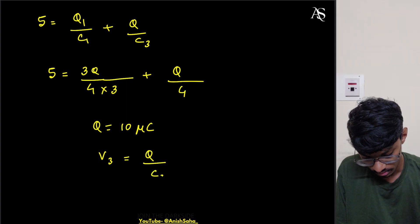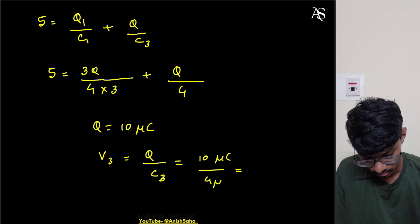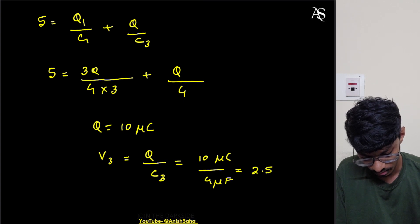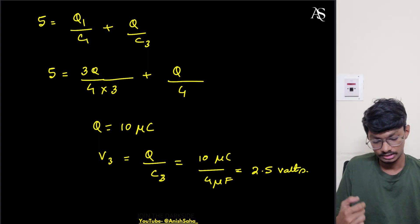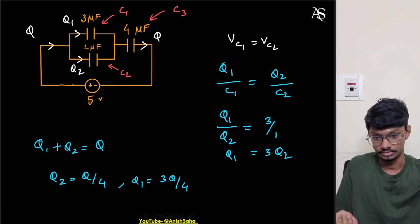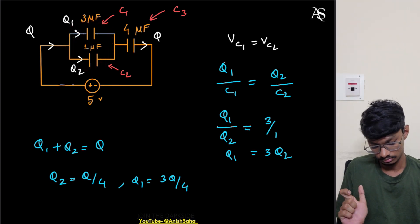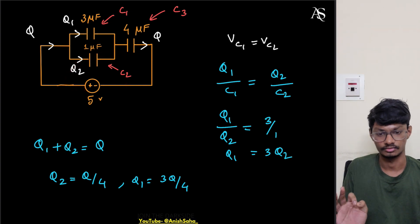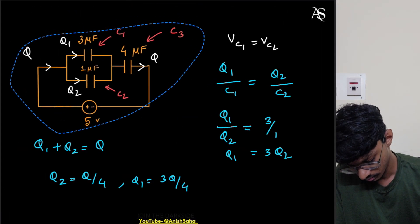Now V3 is simply q by C3, which is 10 microcoulombs divided by 4 microfarads, giving 2.5 volts. So that's the answer for this question using Method 1 with charges. Can we solve this another way? Yes — we can simply find the equivalent capacitance and then find the voltage drop without any charge calculation. That will be much easier. This is Method 1 using charges.